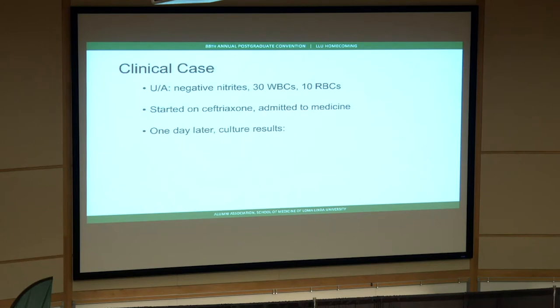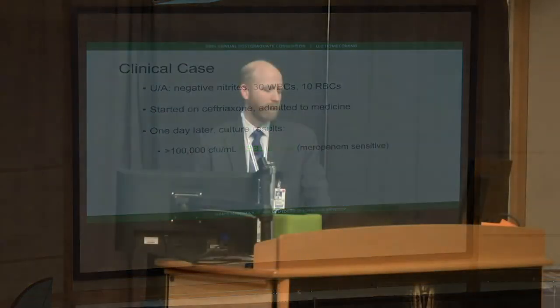The urinalysis comes back: no nitrites, 30 white blood cells — normal is below 5, so this is abnormal — and some red blood cells, so a little bit of pyuria. The physician starts her on ceftriaxone and admits her to the medicine service. One day later, there is a positive culture: greater than 100,000 of extended spectrum beta-lactamase E. coli, sensitive to meropenem but resistant to all other antibiotics. Does this mean PICC line and meropenem for seven or more days?